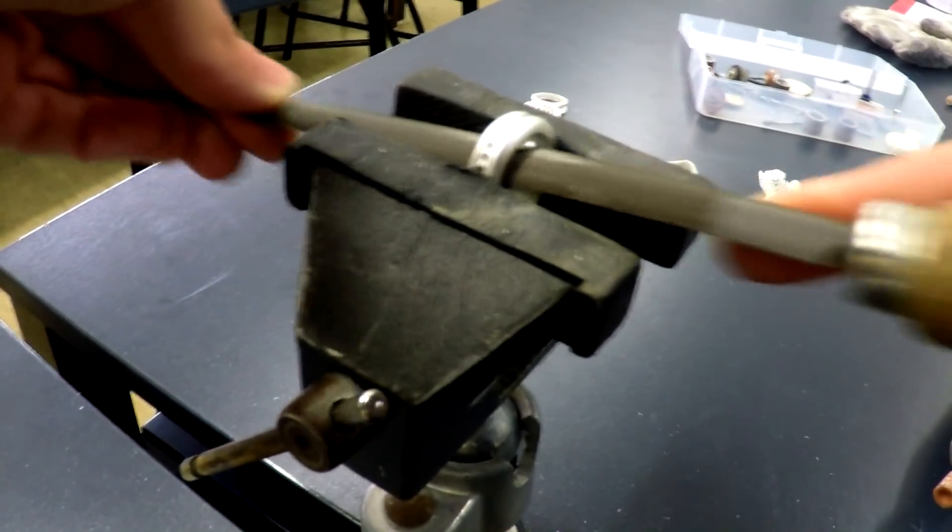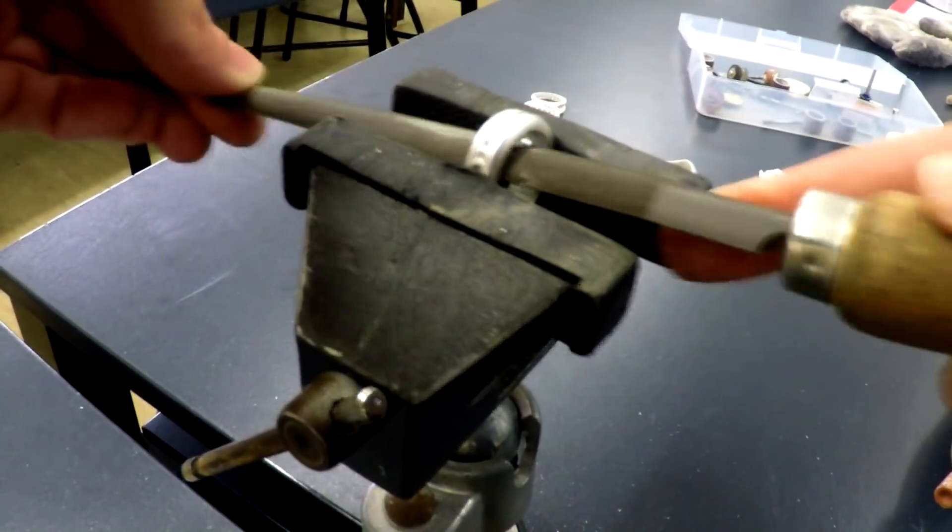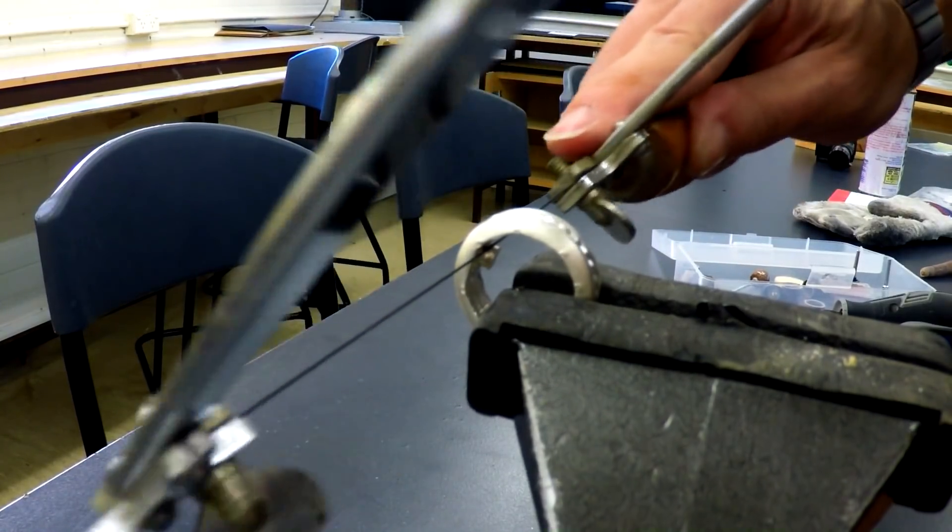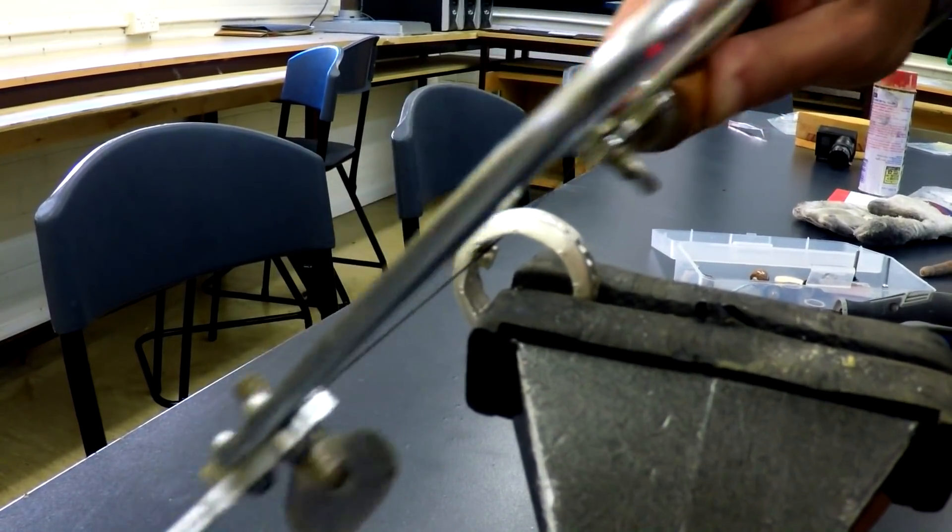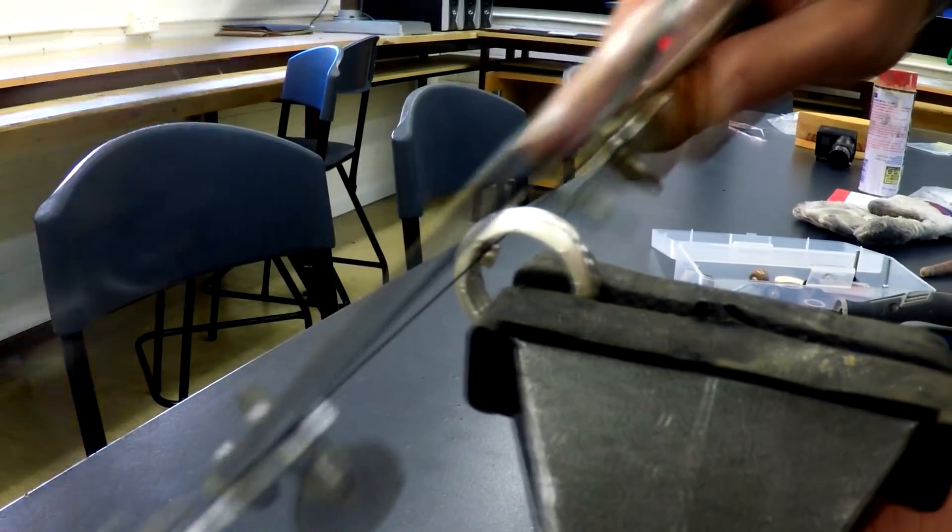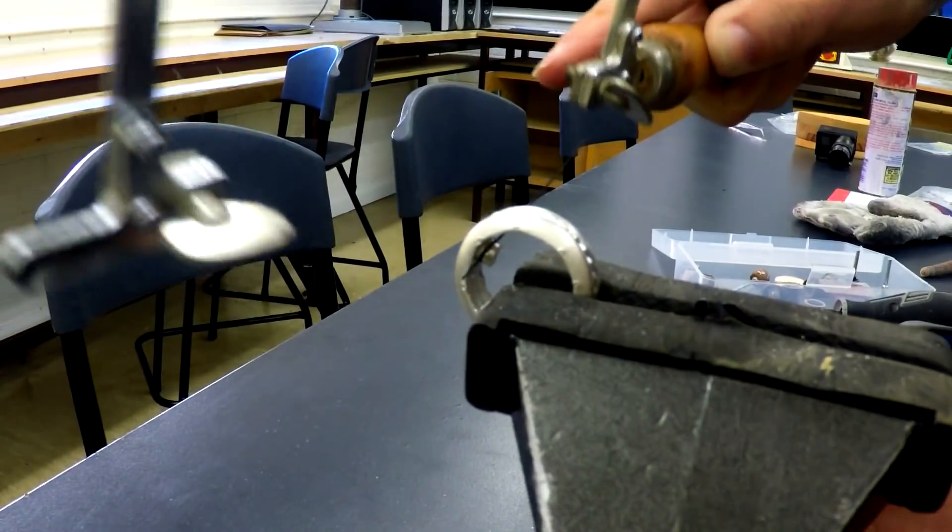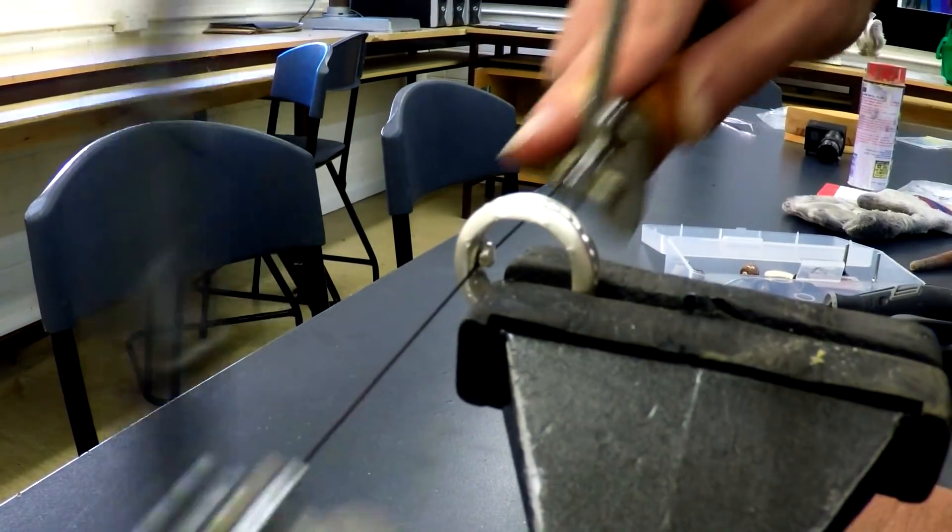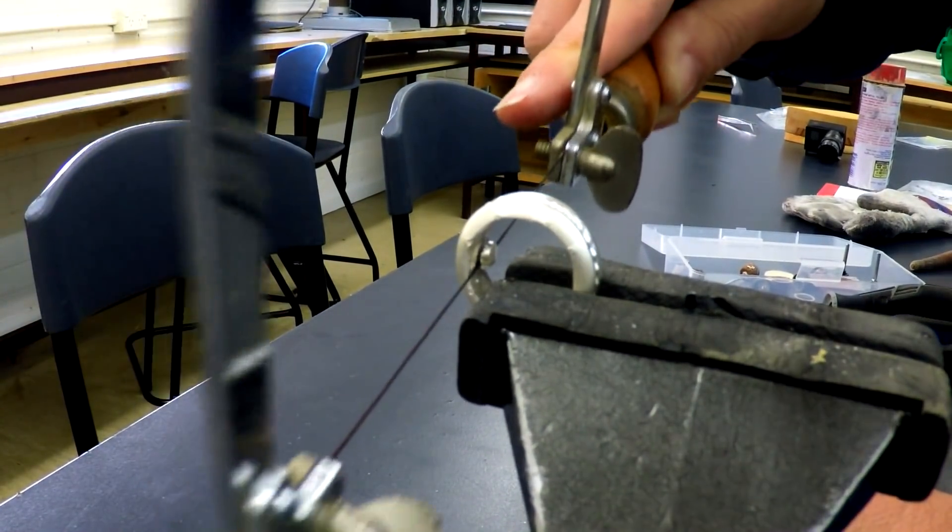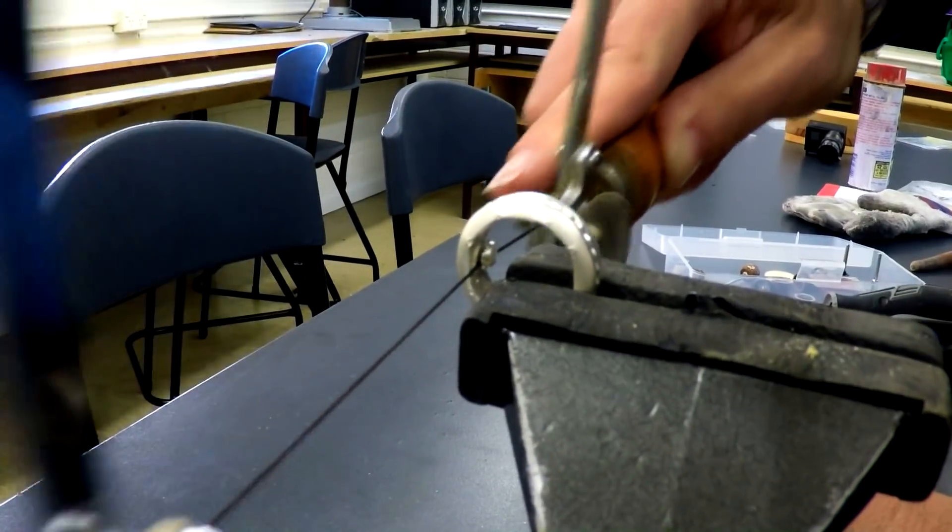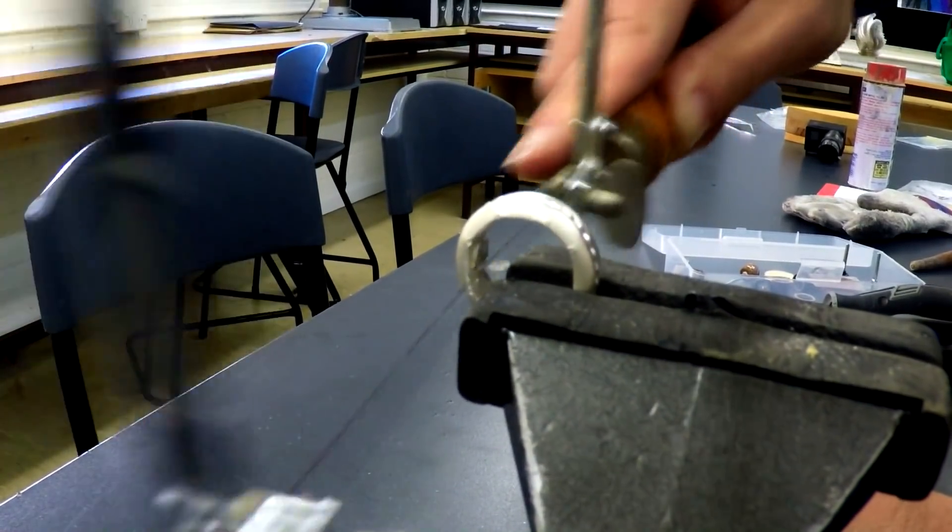Another option for removing the internal sprues is to use a round file. Not much faster here. Finally, I found the right tool for the job. This thing is called a piercing saw and it has an extremely narrow blade. It's very delicate, so if you go too fast and put too much tension on the blade, snap city.